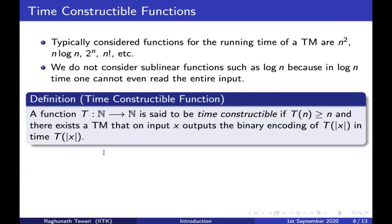If you want, you can look up these examples or try to prove it yourself — for instance, how you can design a Turing machine that given an input x of length n can output the binary encoding of 2^n in time at most 2^n. These are examples of time-constructible functions.